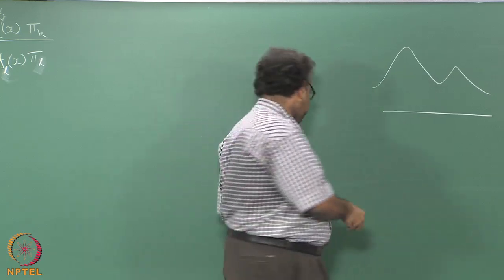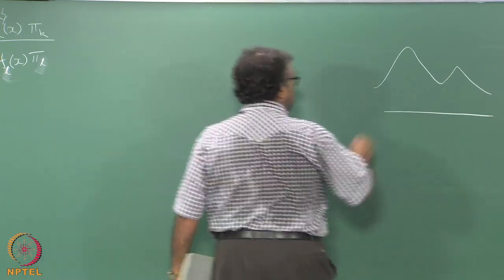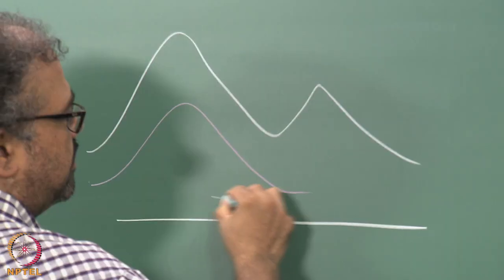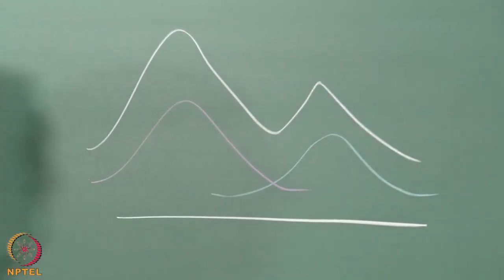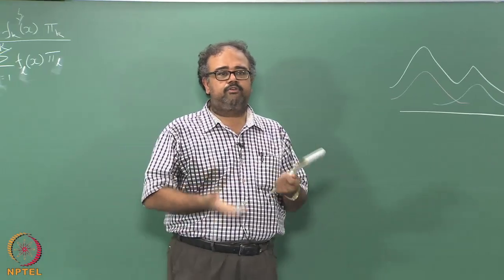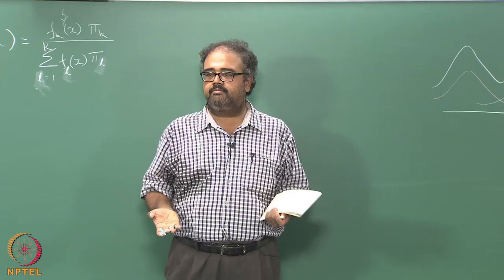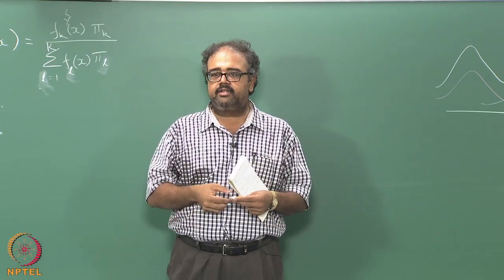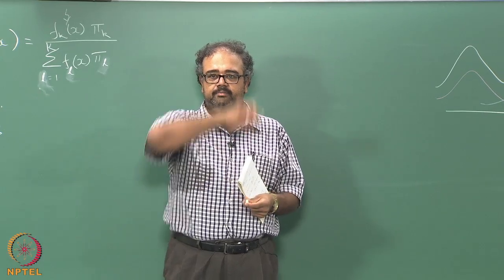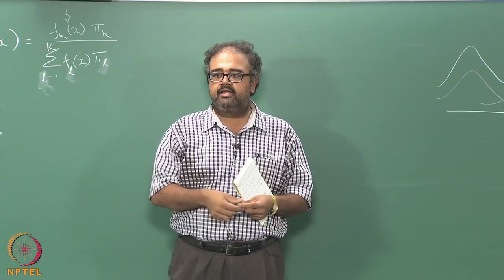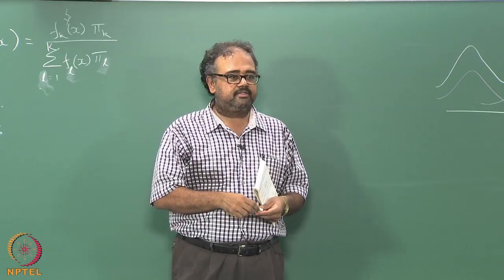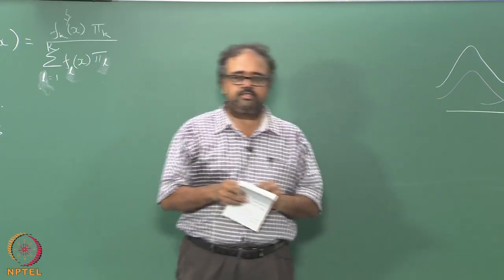But if you think about it, I can look at another Gaussian like that, another Gaussian like that, and I can suitably weigh the two of them and combine the distributions. So the combined distribution will look like it has two peaks. This is essentially the idea behind mixture distributions.